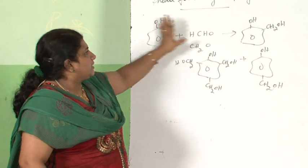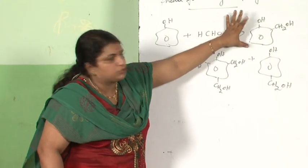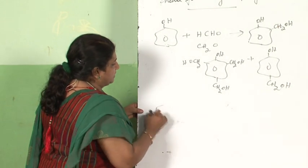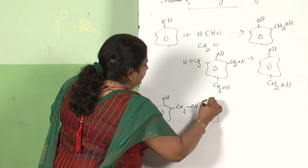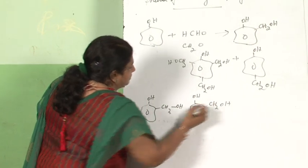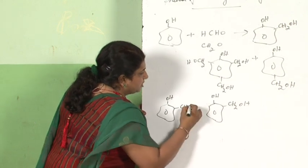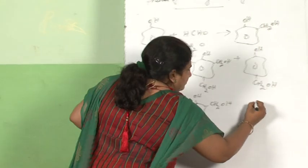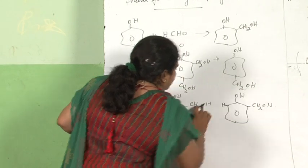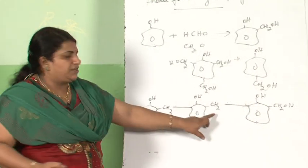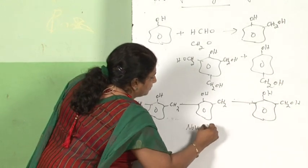If only the ortho-hydroxybenzyl alcohol units combine together, the -CH2OH group reacts with an H on the benzene ring of the next unit, eliminating water and forming a -CH2- bridge between rings. Repeating this step gives a straight-chain linear polymer. This is called Novolac, which is used in paints.